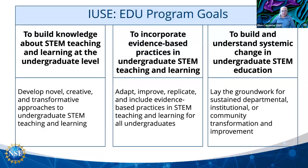We have a couple of major program goals. The first goal is to build knowledge about STEM teaching and learning at the undergraduate level. We're hoping to support efforts that create novel, transformative, and creative approaches to undergraduate STEM teaching and learning. To meet this goal, you can focus on students directly, on faculty professional development, or anything that aids our better understanding of what STEM teaching and learning involves — across disciplines or within a specific discipline.